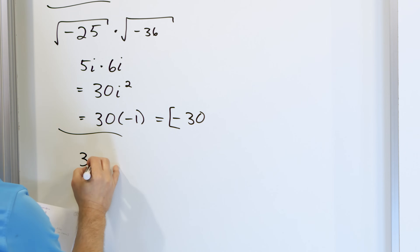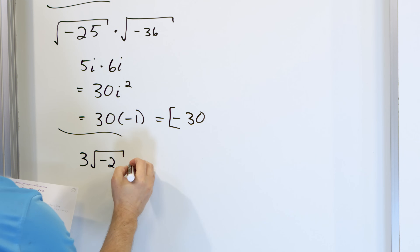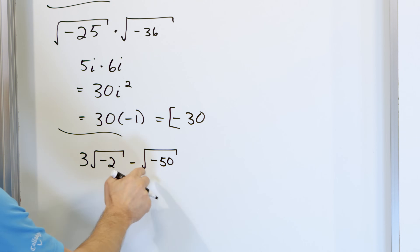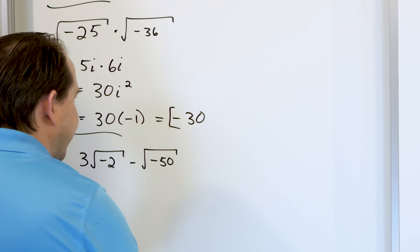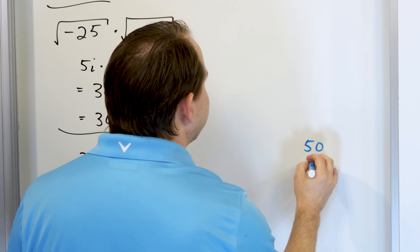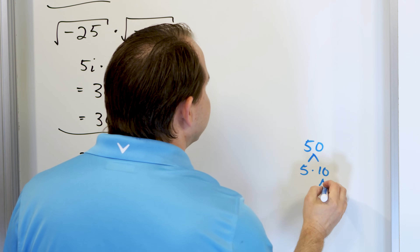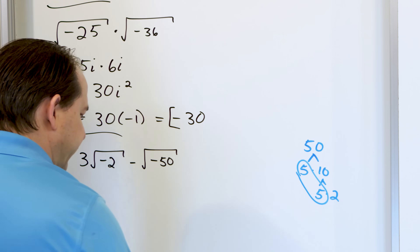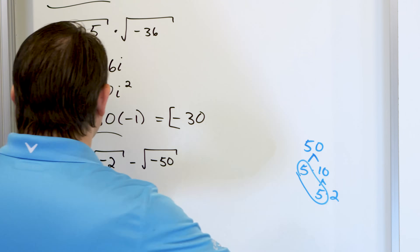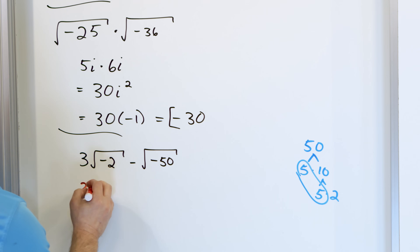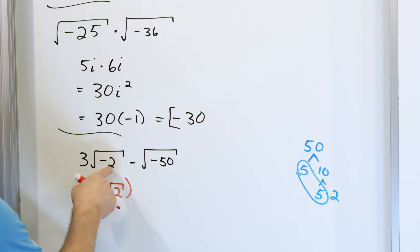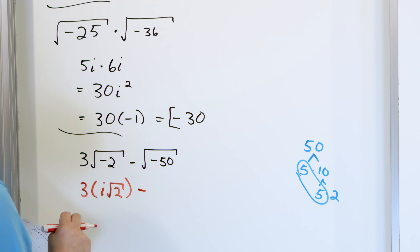What if we have 3 times the square root of negative 2 minus the square root of negative 50? We have to work a little harder here because the second radical has a larger number inside. Let's figure out the factor tree for 50: it's 5 times 10, and 10 is 5 times 2, so we have a pair of 5s. For the first term, the square root of negative 2 is i times the square root of 2 — square root of negative 1 comes out as i and root 2 is left over. Then we have a subtraction.